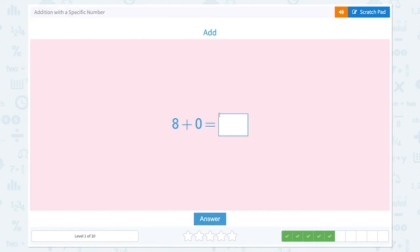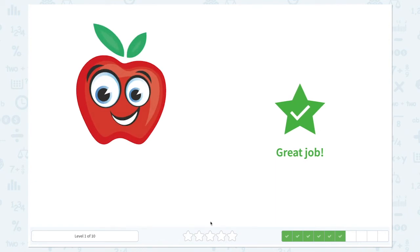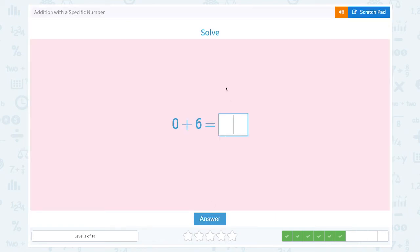Awesome. Add 8 plus 0 equals 8. Great job. Solve 0 plus 6 equals 6.